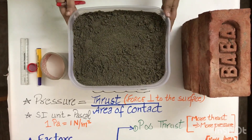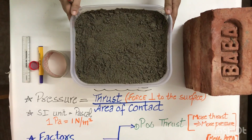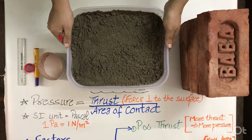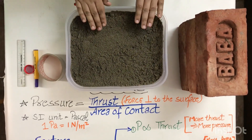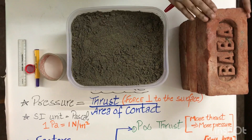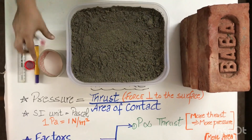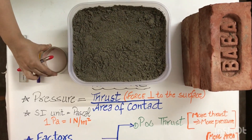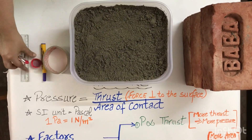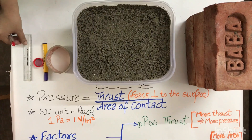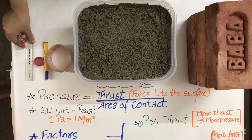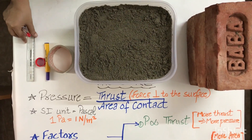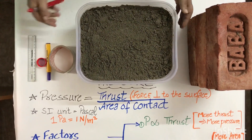For the activity, the materials required are: a tub filled with mud or sand, bricks, a round shape object, a pen, a cap, and a scale to level the sand — because we have to level it again and again.